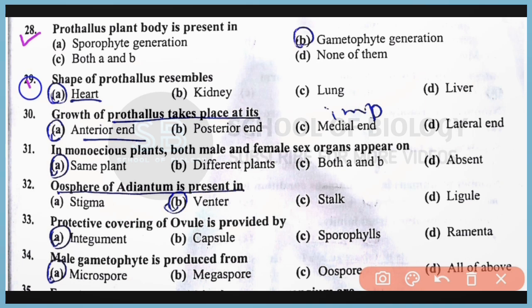Question Number 29: The shape of prothallus resembles the shape of a heart. The correct answer is Option A. Question Number 30: The growth of prothallus takes place at its anterior end. The correct answer is Option A.